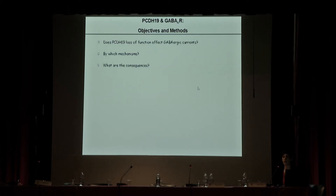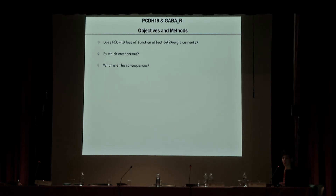Given this interaction and the role of GABAergic transmission in the brain, in the lab we wanted to address three questions: first, whether protocadherin-19 loss of function may affect GABAergic transmission; second, by which mechanism; and finally, what are the consequences for neurons.